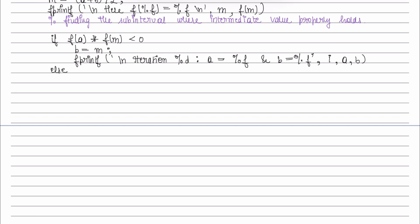Otherwise, the intermediate value property will hold between m and b. And in that case, we will update the value of a as m.